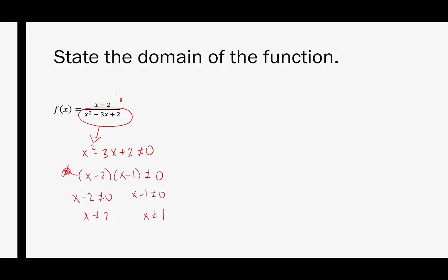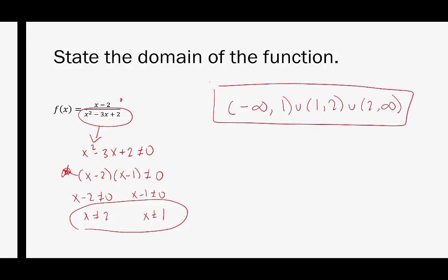The restrictions on the domain are still this, even though we can factor out that x minus 2. So the way we're going to write this domain is we're going to say it's all real numbers from negative infinity to 1, and then from 1 to 2, and then from 2 to infinity. And that would be the domain of this function.